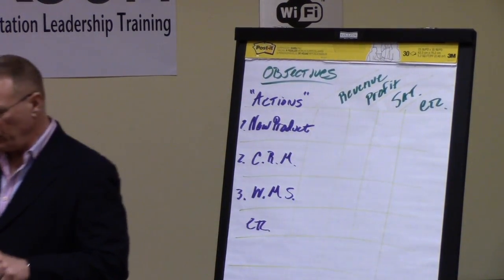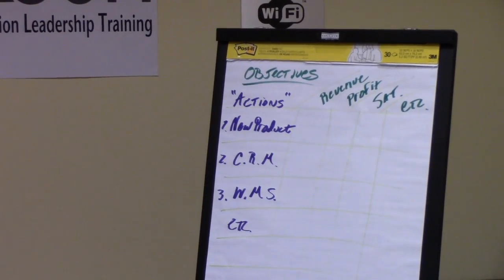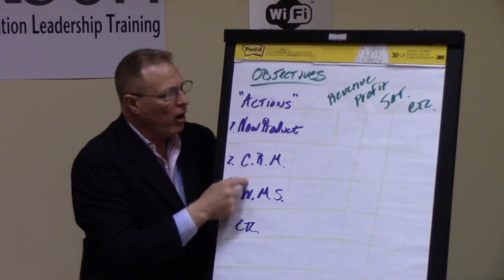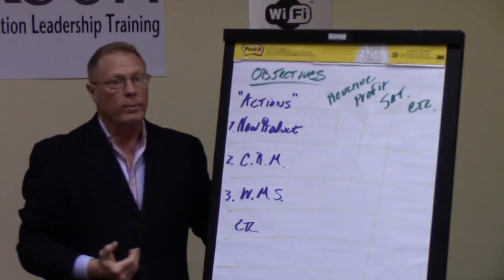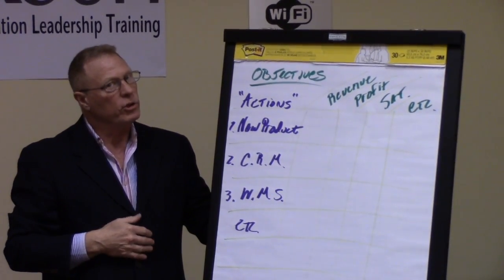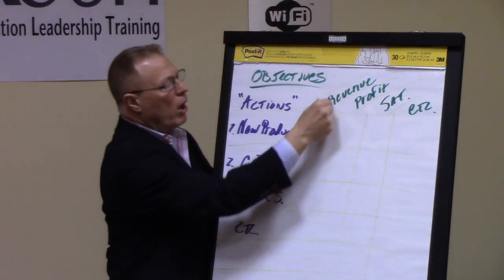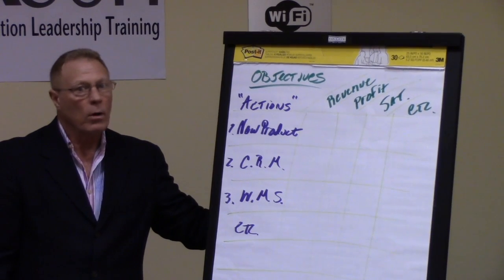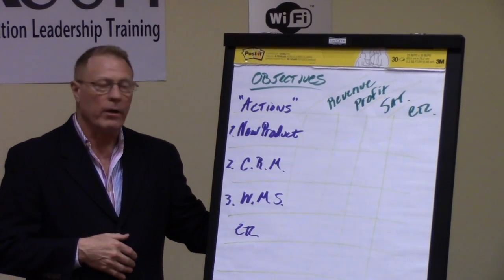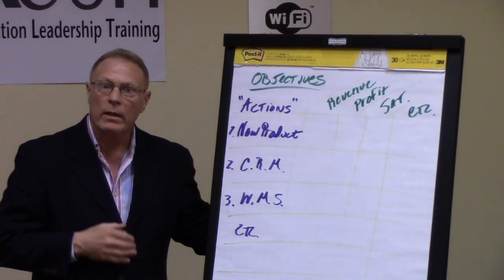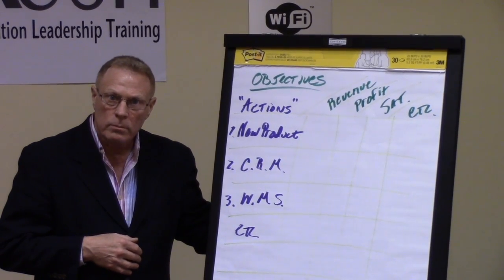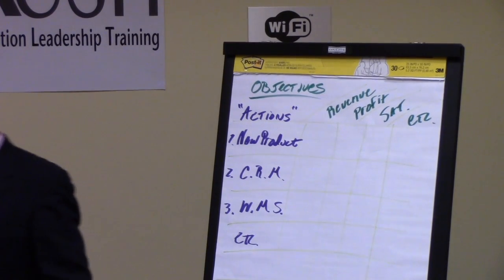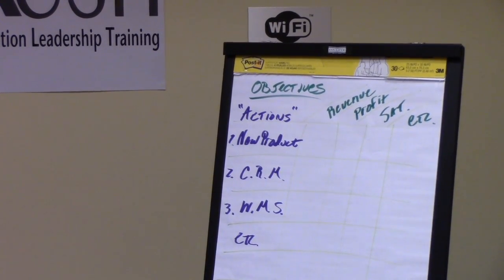Having arrayed these as such, most textbooks say now let's make sure that all of our actions support at least one objective, or maybe we shouldn't do it. Make sure all of your objectives have enough support behind them or you're putting yourself at risk of failure. That logic made sense to me, so that's exactly what I did — once — and I'll never do it again.